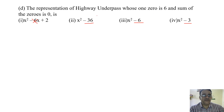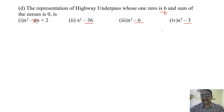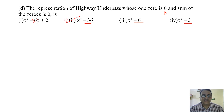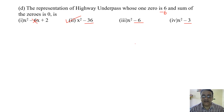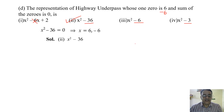The other zero is minus 6, so the product is minus 36. To verify: x squared minus 36 equals zero, x squared equals 36, giving plus or minus 6. So the correct option is the second one.